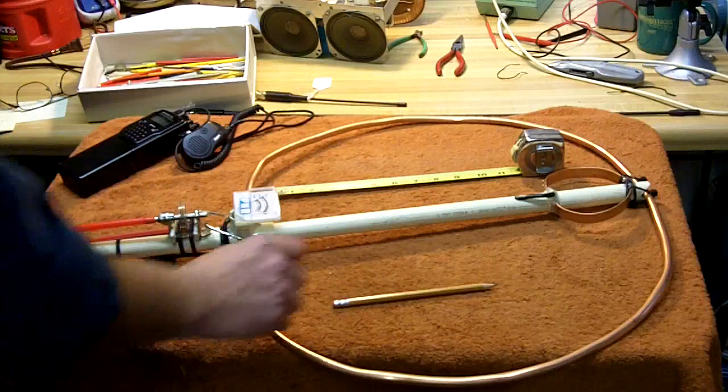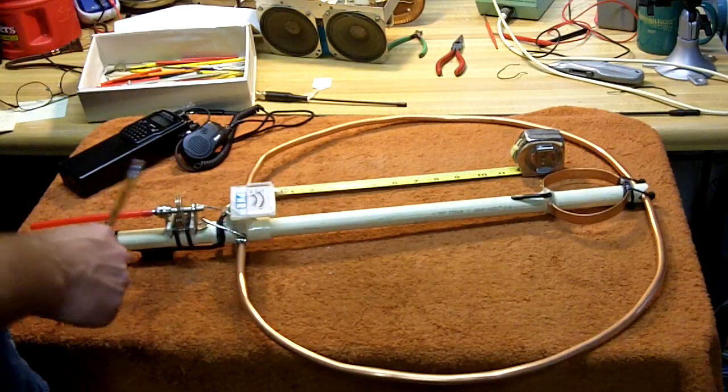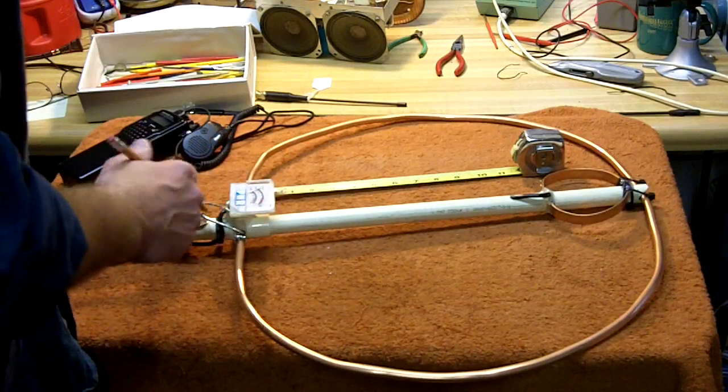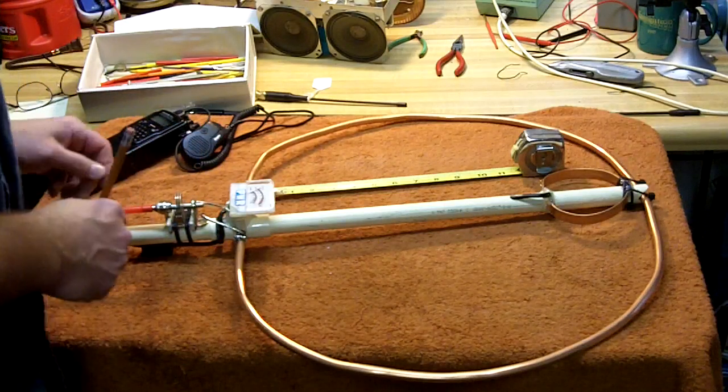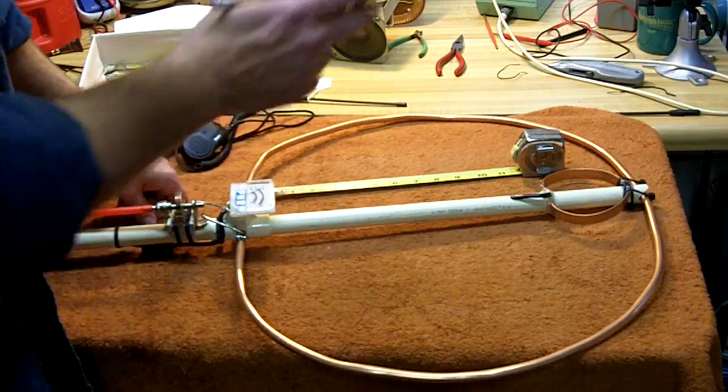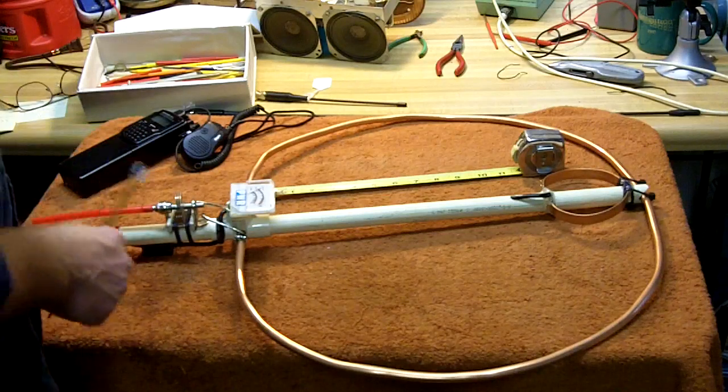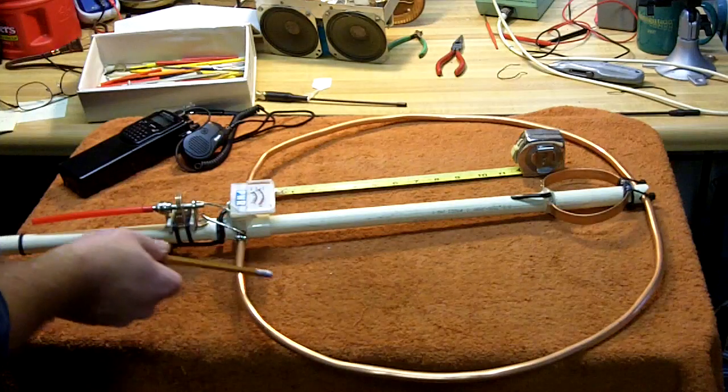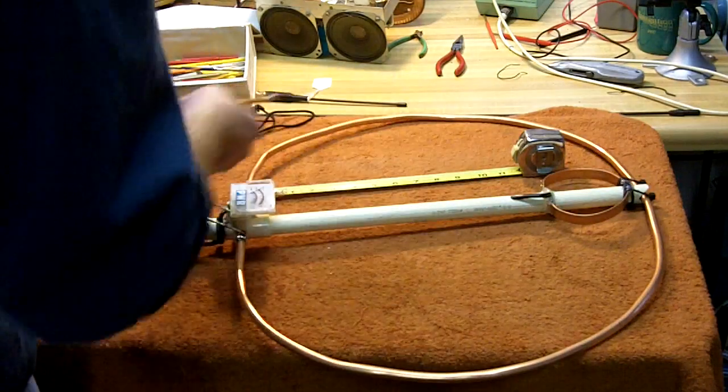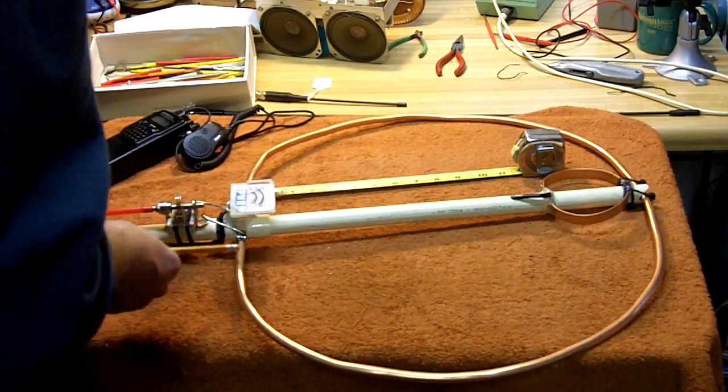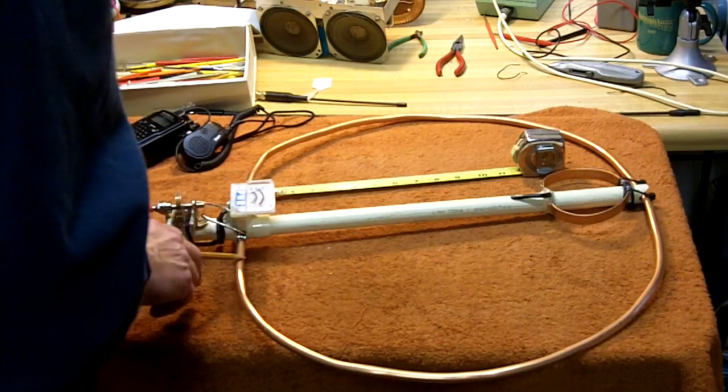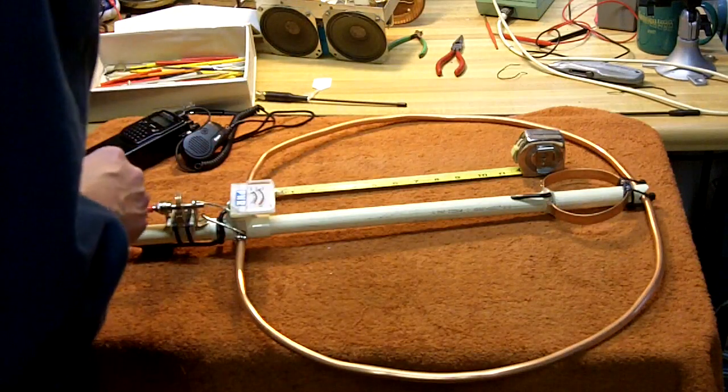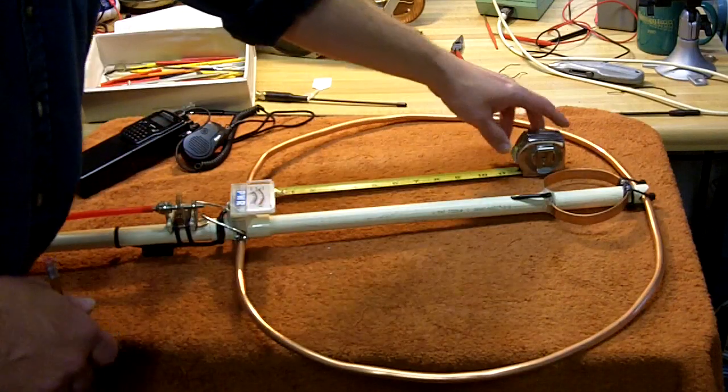Loops are very efficient for their size. They're a high Q tuned circuit, so you have to retune them every time you change frequency pretty much. They're very narrow on where they're resonant at, and that's the purpose of this tuning capacitor. The size of the loop is not really all that critical—usually it's a fraction of the wavelength for the frequency you're going to use it on.